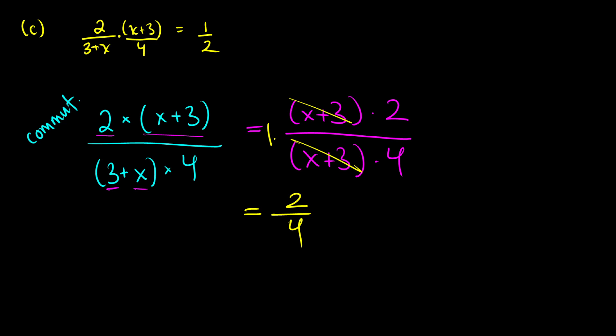Now what's 2 divided by 4? Well, if we divide the top and bottom by 2, we get 1/2. So yes, these are equivalent. And by using commutativity on the numerator and the denominator, we've been able to find that yes, these are equivalent.